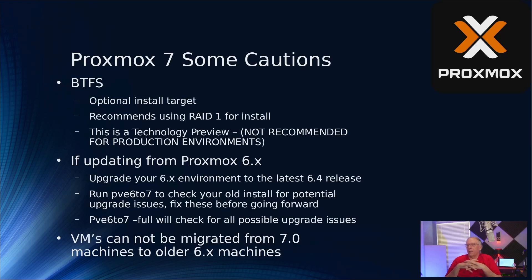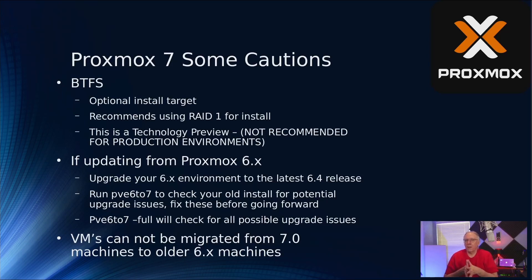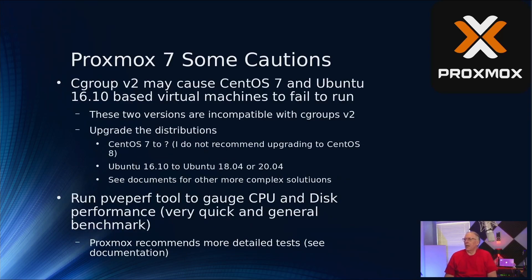Once you've created a VM on a version 7 environment, you can't migrate it back to a Proxmox 6 host — there are major differences in configuration structure. VMs created under version 6 should still be movable. There are also issues with Cgroup version 2: CentOS 7 or Ubuntu 16.10-based VMs may fail to run because those versions don't support Cgroups v2.